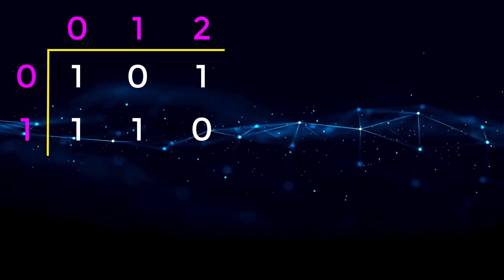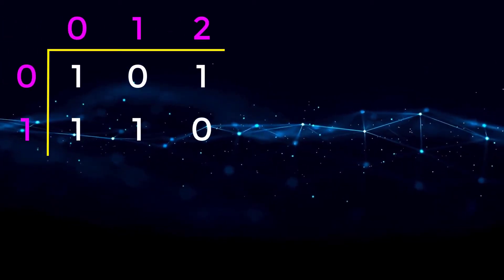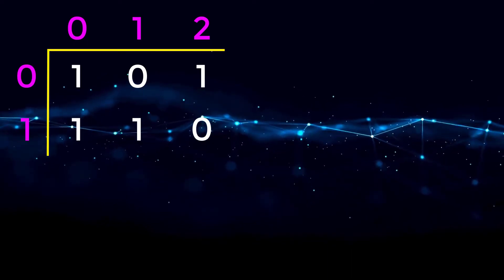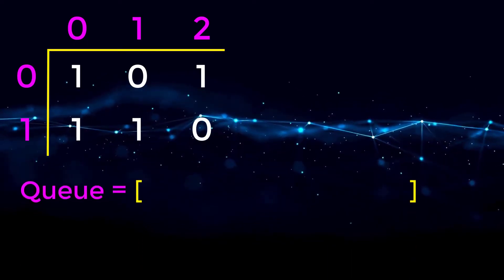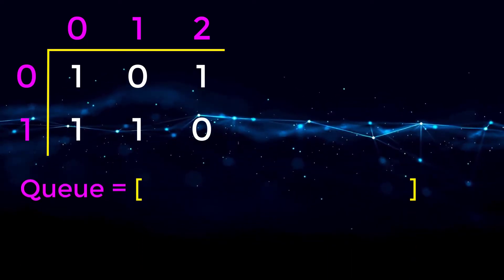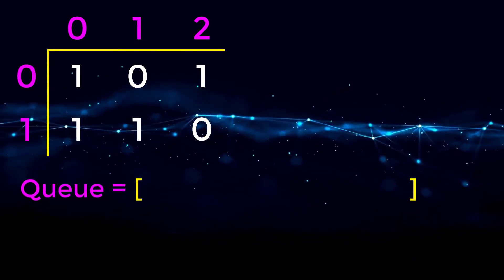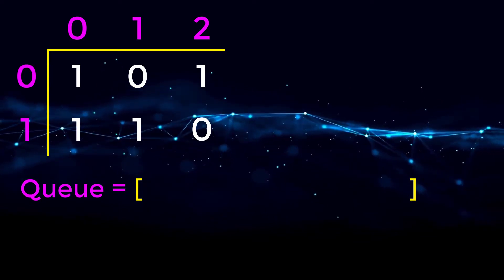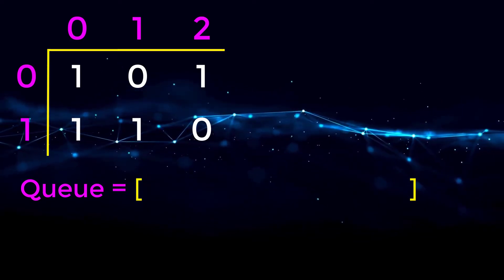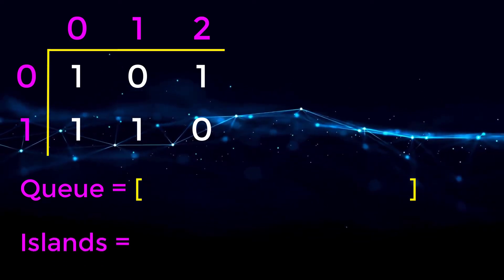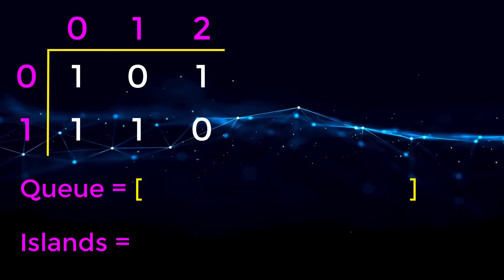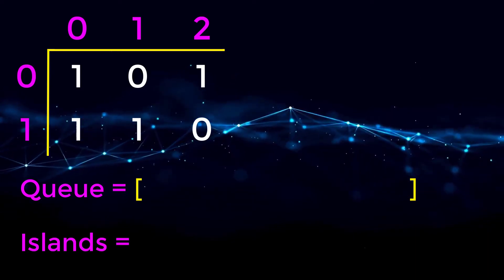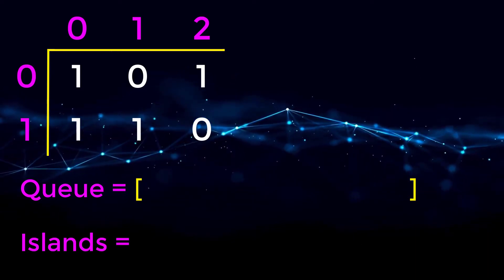Since we are solving this using a BFS breadth first search, we will initialize a queue to keep track of the position we are at inside of this 2D array. We're also going to have a variable called islands to keep track of how many islands we tally up as we go through this 2D grid.